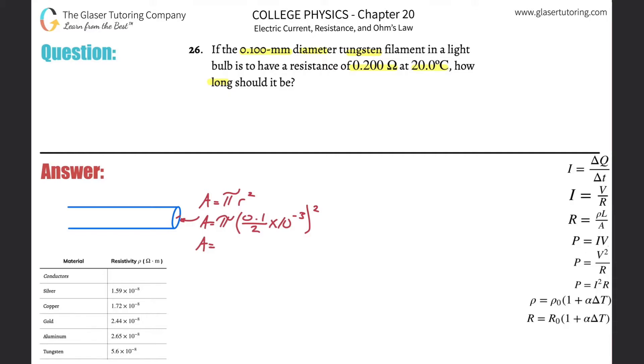Hopefully we've been doing enough practice where this makes sense. So 0.1 divided by 2, multiplied then by 10 raised to the minus 3, and we're going to square that. And by the way, I already plugged in the π. So we get an area here about 7.85 times 10 to the minus 9, and that will be in terms of squared meters.